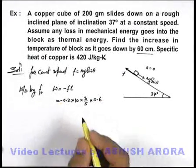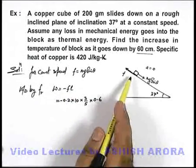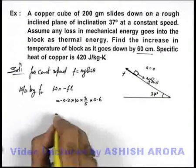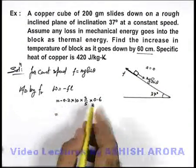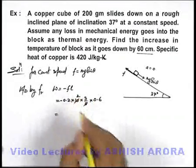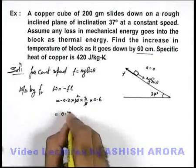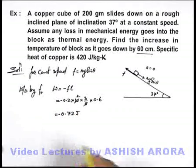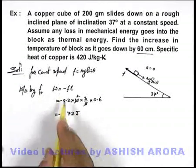The negative sign shows that the work done by friction is negative; it is extracting energy from mechanical energy. On calculation, the result is -0.72 joules. This is the work done by friction.